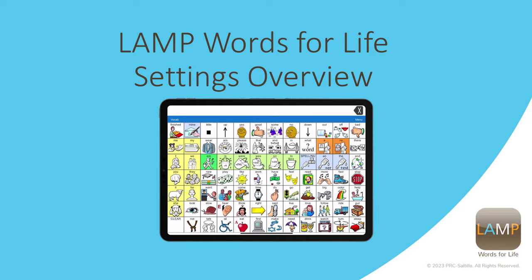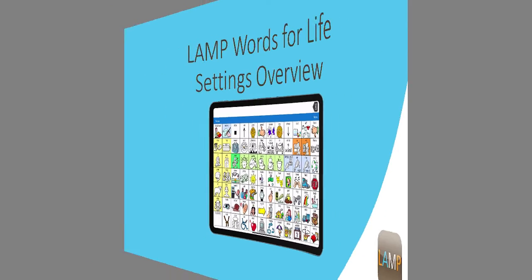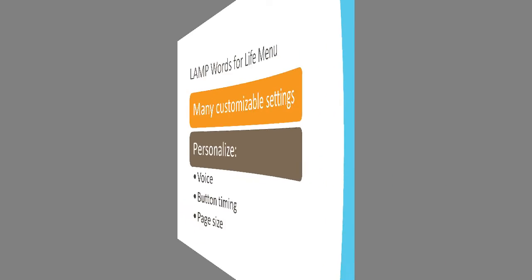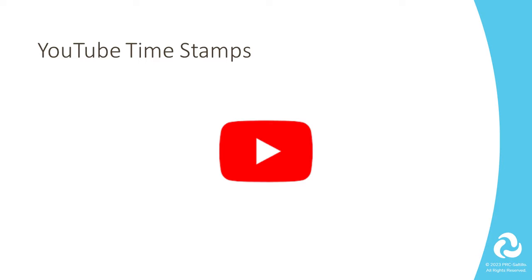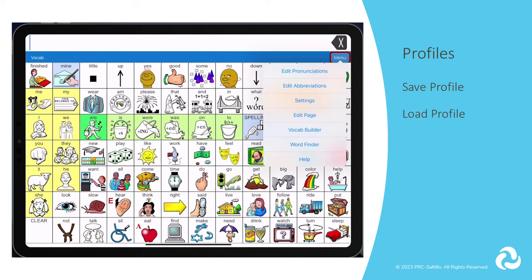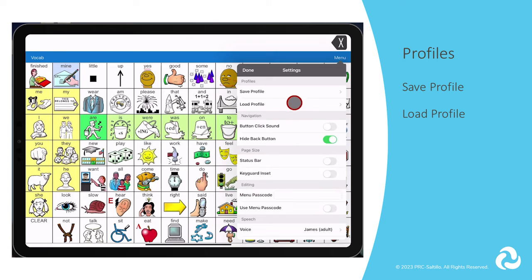Let's take a look at the Settings menu in the LAMP Words for Life app. There are many ways to customize and personalize your LAMP Words for Life app to best fit your AAC learner's needs. You will find timestamps for each of the settings in the description under the YouTube video. Click on those to move ahead to the settings you were looking for. Start by going to Menu, then Settings. We will go through each of the subheadings in the Menu settings and discuss what they do and how you could use them with your AAC learner.